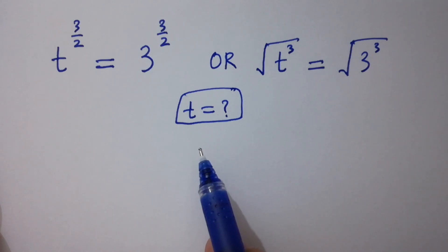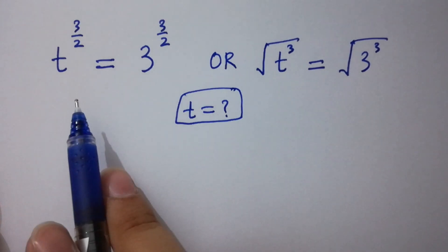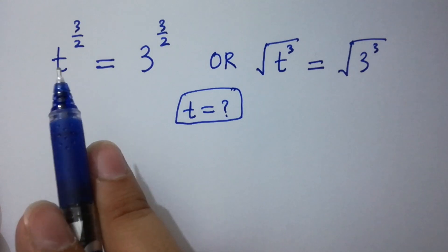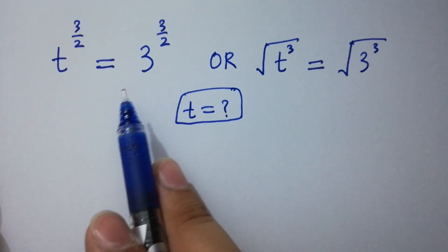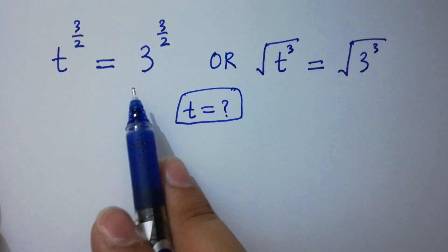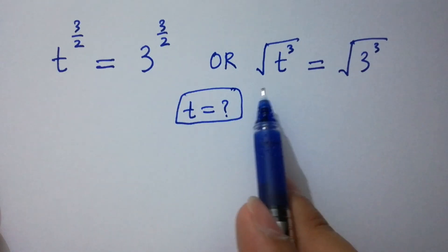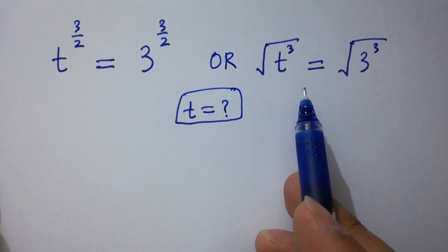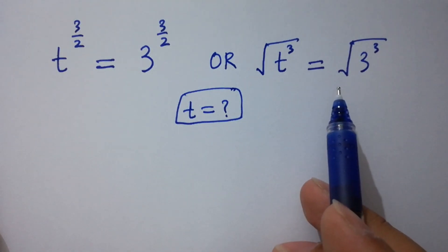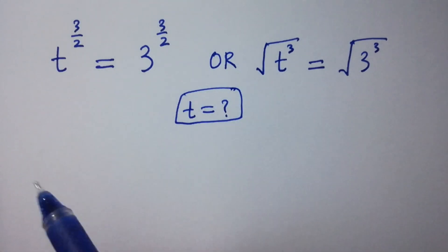Hello friends. Find the value of t if t to the power 3 over 2 equals 3 to the power 3 over 2, or equivalently, the square root of t cubed equals the square root of 3 cubed. Let's find a solution.